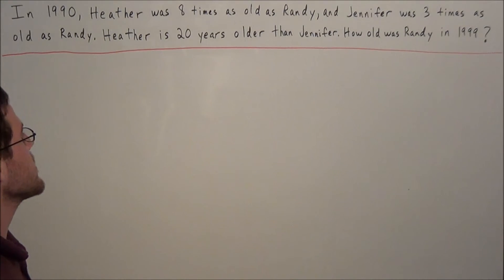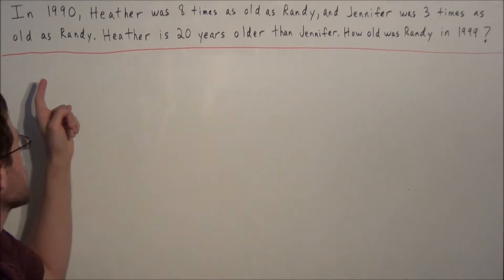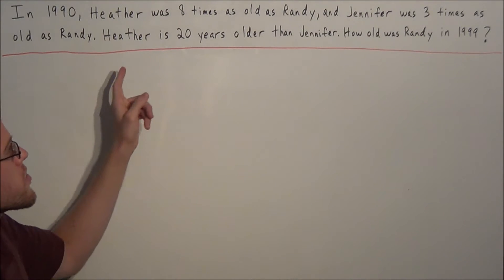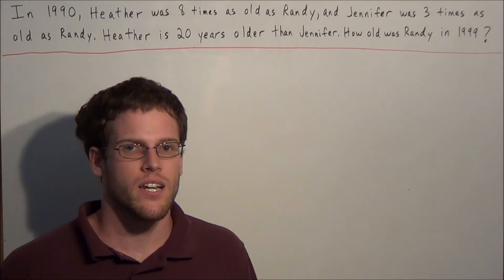So we have, in 1990, Heather was 8 times as old as Randy and Jennifer was 3 times as old as Randy. Heather is 20 years older than Jennifer and we need to find how old was Randy in 1999.